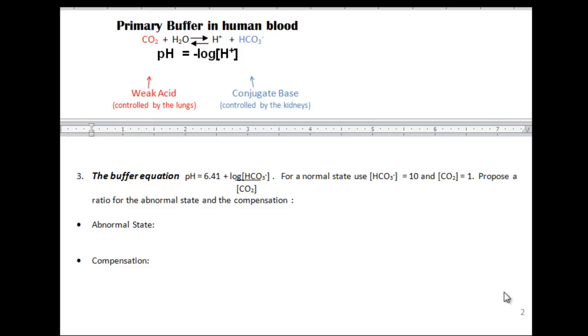Now we'll address respiratory acidosis with the buffer equation. Remember, the buffer equation is pH equals pKa, in this case the pKa is taken to be 6.41, plus the log of the ratio of the conjugate base, in this case the bicarb, over the weak acid, which is the carbon dioxide. So first you divide this fraction, then you take the log of that number, and you add that to 6.41.